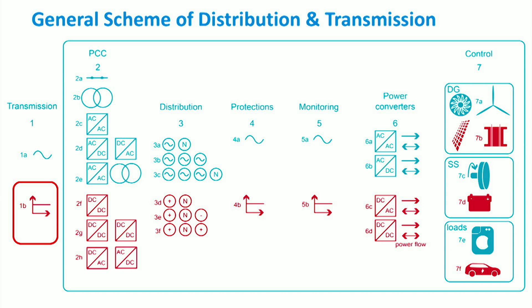The high voltage at the transmission side can be stepped down by DC-DC power converters and then the power can be transmitted through monopolar, bipolar or homopolar DC types, which are discussed in the next weeks.